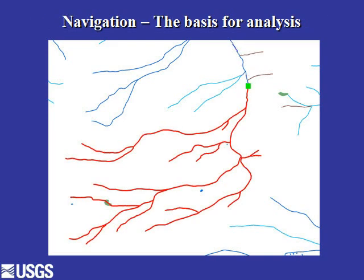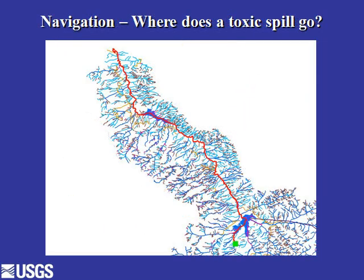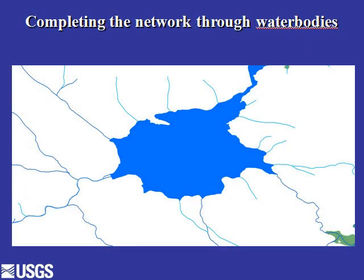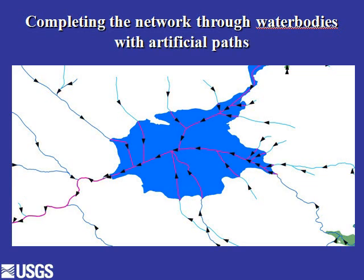We can take a spot — shown here as a green square — and easily identify all the streams upstream, shown as red lines. We can also trace the pathway downstream from this point. For example, if there were a toxic spill at this location, we could trace the water downstream and see what it would affect. One challenge in creating this dataset is figuring out how water flows through lakes — where it enters and exits — so we use a system of artificial paths that give us flow direction through lakes to maintain a complete network.